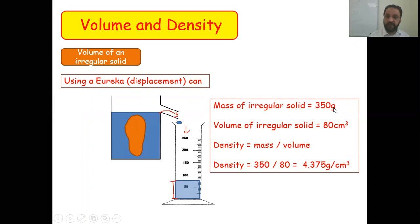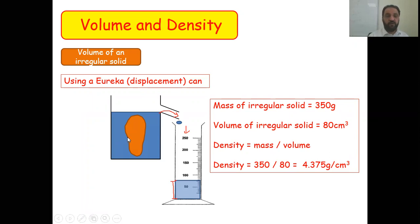For example, if mass is 350 grams and volume measured from displaced water is 80 centimeter cube, then density equals 350 divided by 80, giving 4.375 grams per centimeter cube. This is the density of the irregular solid.